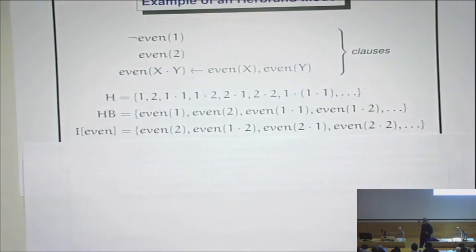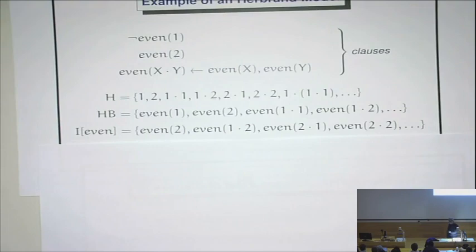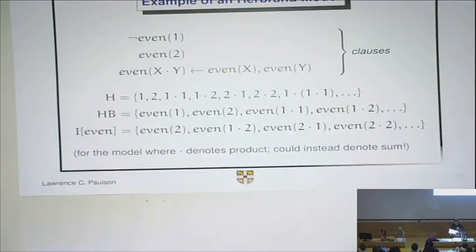If, on the other hand, you said, no, I hate multiplication. It's the most awful mathematical operation. We're going to use addition instead. I don't have it on the slide here, but you can see that, for example, one plus two is not even, and we would not keep it in our interpretation of the even predicate if we based our Herbrand model on the addition.